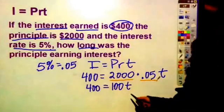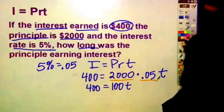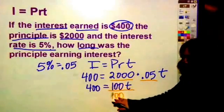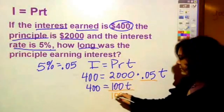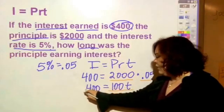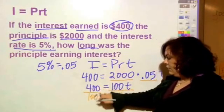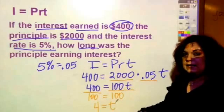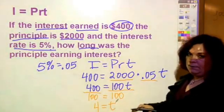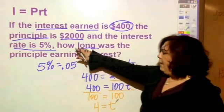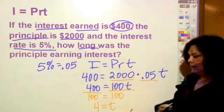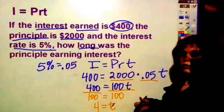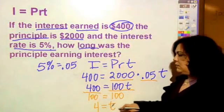This is a multiplication equation. How do I undo multiplication? I divide. I'm going to divide by 100 to get t by itself. Whatever I do to one side I do to the other. 400 divided by 100 is 4, so 4 = t. The time is 4 years, and t is always in years.